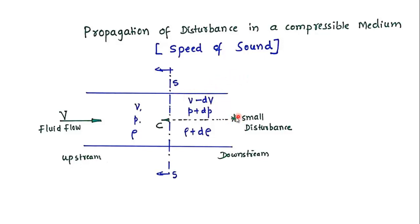A small disturbance is created at the downstream, and this disturbance will travel in this direction towards the upstream with an absolute velocity c. This disturbance travels exactly the way sound travels in a medium, so it can be regarded as the travel of sound. We will try to evaluate the velocity of disturbance with respect to v, since the velocity of this disturbance or sound depends upon the fluid velocity v.